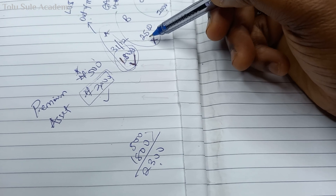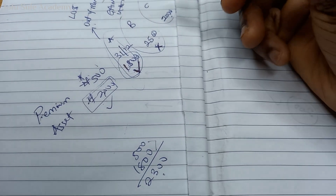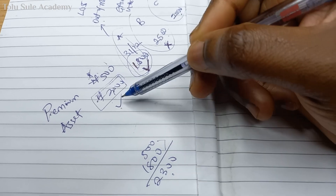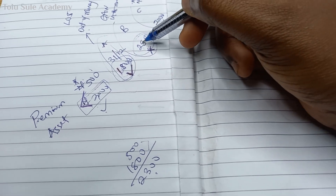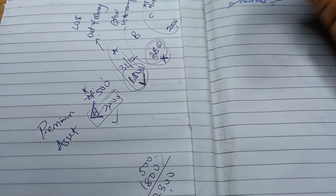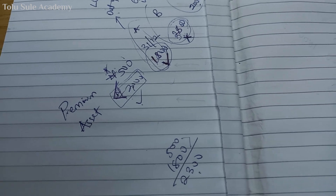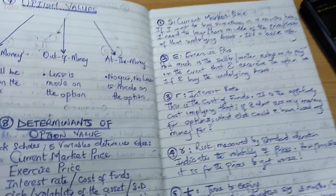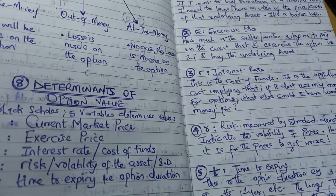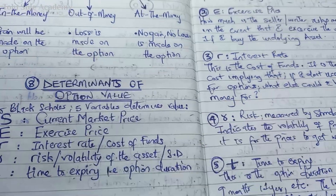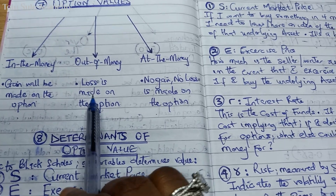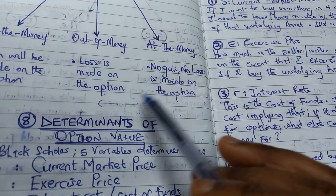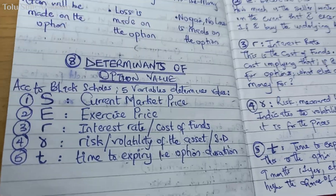If you find the calculator costs 2,500 in the future, you'd be glad you locked it in at 2,000 — that's the in-the-money scenario. If the market price equals the agreed price exactly — both 2,000 — that is the at-the-money option: no gain, no loss. The price you agreed is the same price you find in the market at the future date.